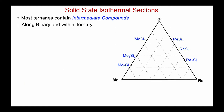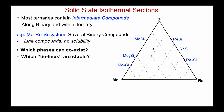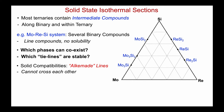Most ternaries contain intermediate compounds, either along the binaries and perhaps within the ternary itself. Let's look at an example of the Mo-Re-Si system. There are several compounds lying along the binaries between MoO and Si and Si and Re. These are in fact line compounds — they show no solid solubility — so we represent them as dots on the phase diagram. The issue is: when we go into the middle of the triangle, what phases can coexist? Which tie lines are stable? The solid compatibilities — the tie lines joining two stable phases — are called Alkemade lines, and Alkemade lines cannot cross each other.